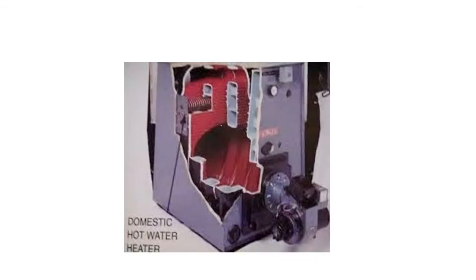Tankless coils use the heat from a boiler to transfer heat to the domestic water. The coil is actually bolted into the boiler, but it's an entirely separate system. The coil itself is basically a long run of copper tubing with fins cut into the outside of it. The inlet and outlet of the coil are only a few inches apart from one another, but there's quite a bit of pipe in between. By the time the cold water gets through all the pipe, it comes out very hot on the other side.